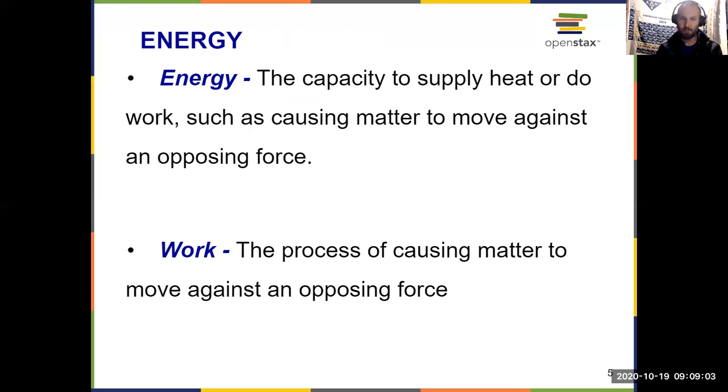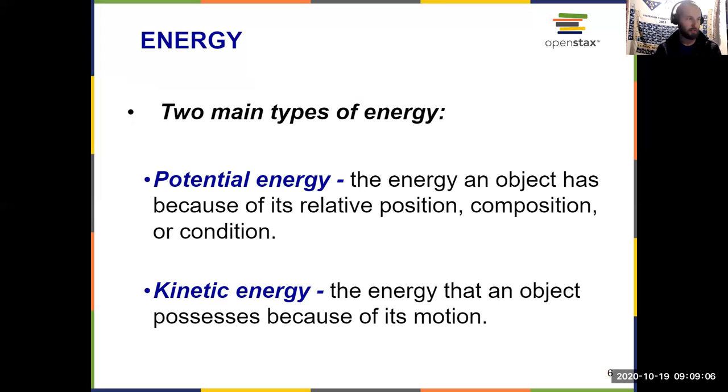And there are two types of energy. You've probably heard of these before as well, but if not, here are their definitions: Potential energy and kinetic energy. Kinetic energy is the one that students tend to be more familiar with, like the energy that an object possesses because of its motion. So when your car is traveling down the highway, it has a lot of kinetic energy. Potential energy is the energy that an object has because of its relative position or its composition or condition, which tend to relate to chemistry, the composition and condition.